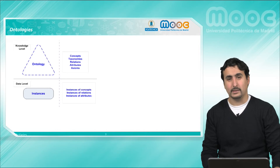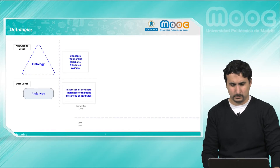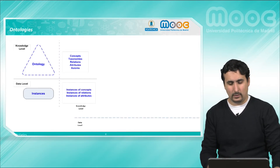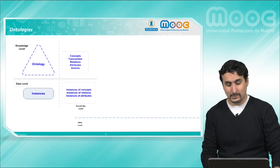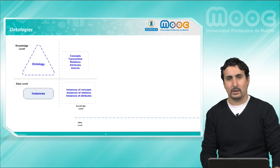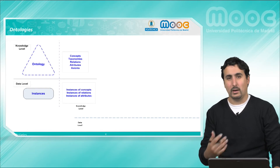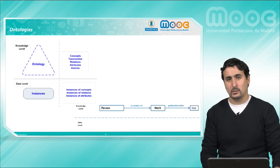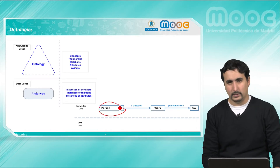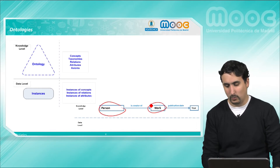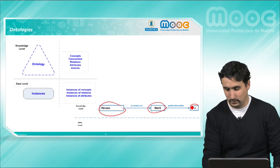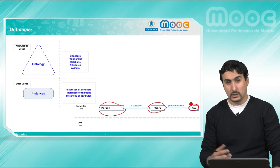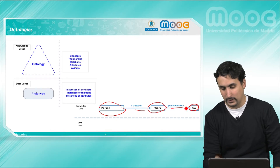On the other hand we have the data level in which we define the instances of the corresponding concepts and relations. We see here an example of how this can be represented. Let's say that we are annotating the biographical domain — that is, information about authors, works and their related information. We could create for it a model in which a person is related to a work, a person is the creator of a work, and this work has a publication date. So at the knowledge level we will have the concepts: person, work, and year, and the relations: is creator of and publication date.